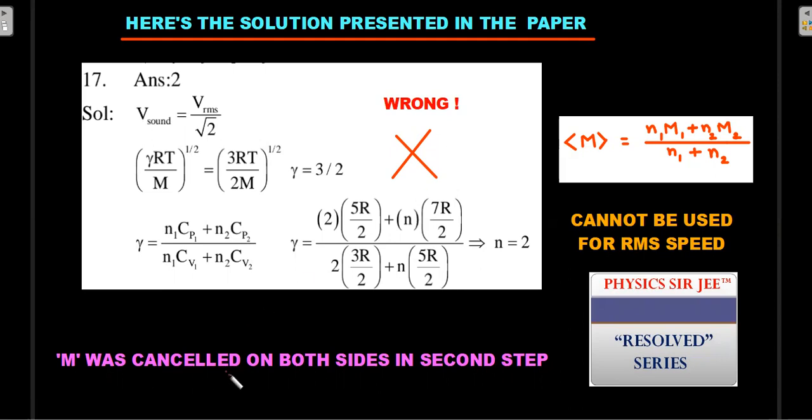I claim that this particular solution is wrong and I asked students in the community post to respond why do they think that is wrong. Some of the students actually guessed it right - because M was cancelled on both sides in this step. So the average molar mass for a gas mixture during the derivation of velocity of sound calculation and the average molar mass that is required for the RMS velocity calculation are going to be different. You cannot cancel this capital M.